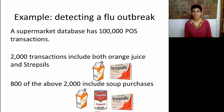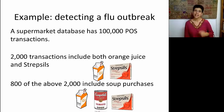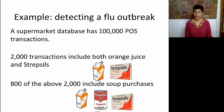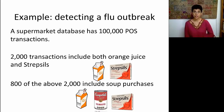Suppose we're trying to detect an influenza outbreak, and we know that people with flu-like symptoms tend to buy orange juice for the vitamin C, strep cells, and perhaps also soup. Let's look at a large supermarket database with 100,000 transactions, where each transaction is a basket of a particular customer. Across these 100,000 baskets, we find 2,000 baskets that contain orange juice and strep cells, and among these 2,000, 800 also include soup.